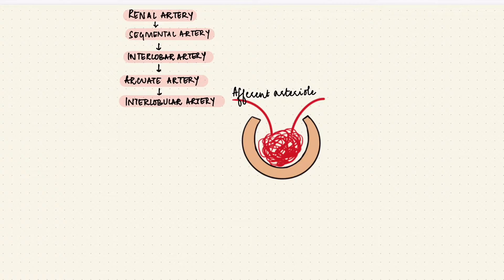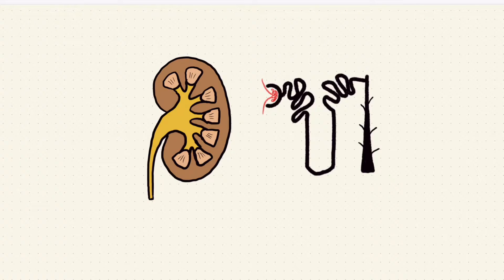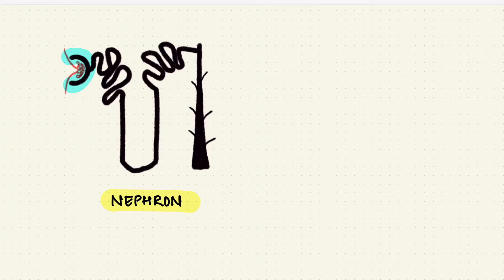The afferent arteriole enters the first part of the nephron, the glomerulus. So the kidney has millions of nephrons and these nephrons are the core functional unit. They have a tuft of capillaries called a glomerulus and a renal tubule.